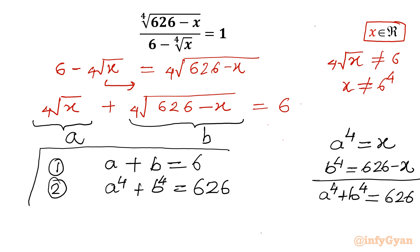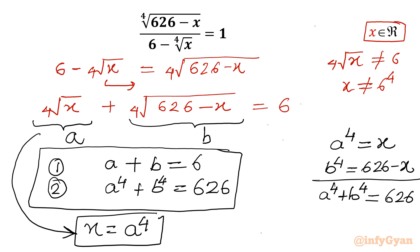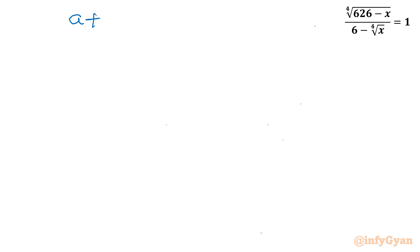This is a fresh system of equations for which we will find real solutions for A and B. Once A is known, x equals A to the power 4, so our target is to find A only — automatically we will get x. So we consider these two equations: A plus B equal to 6, and A⁴ plus B⁴ equal to 626.